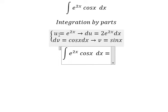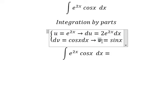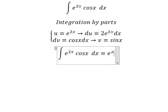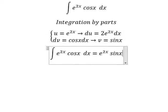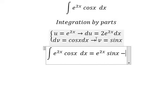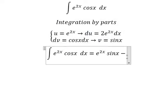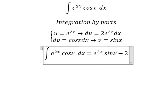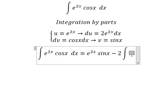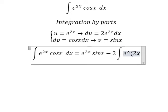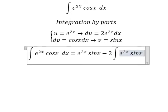So we have u multiplied by v minus du multiplied by v. So we have number 2, and we have the integration e to the power of 2x sine x dx.